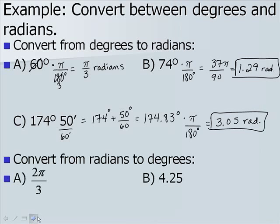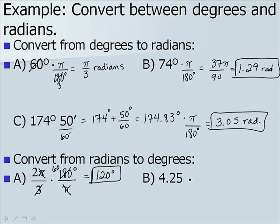Now let's convert from radians to degrees. For 2π/3, we multiply by 180/π — π cancels — and 3 goes into 180 sixty times, so we have 2 times 60, giving 120 degrees. For 4.25 radians, we multiply by 180/π and get 243.5 degrees. Converting that to degrees and minutes, that's 243 degrees 30 minutes.